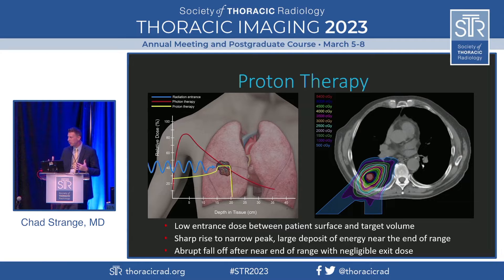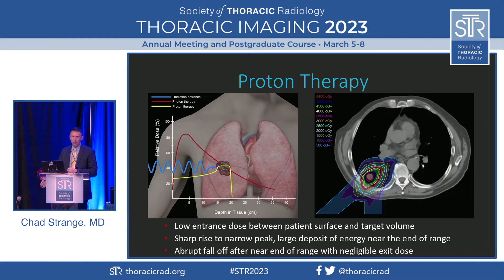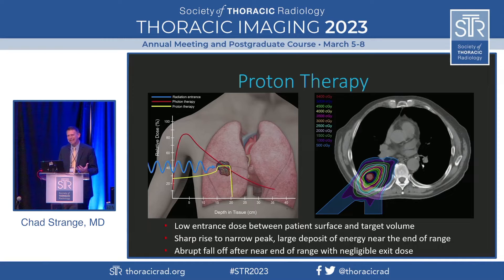Proton therapy is a little bit different, but imaging-wise it's going to be similar for us. The blue line is the direction and skin entrance of the proton therapy. The red line is the radiation dose of conventional radiation therapy — the largest dose is at the entrance and then it drops off to the tumor. The yellow line is the radiation dose for proton therapy: at the entrance there's a lower dose, it actually increases up to the tumor, and then it abruptly drops off. That phenomenon is called the Bragg peak — lower entrance dose, higher dose at the tumor, and then an abrupt drop-off, meaning less damage to the surrounding lung.